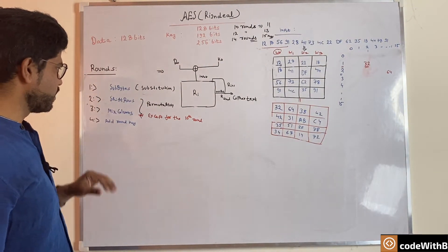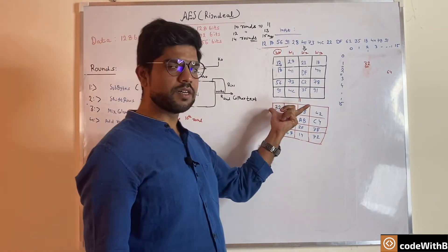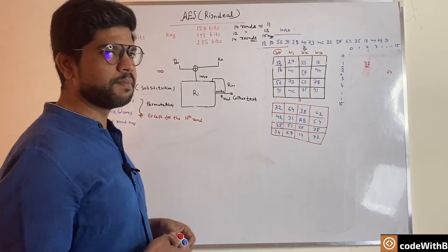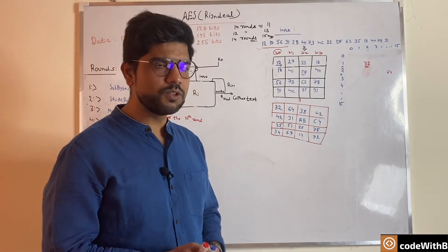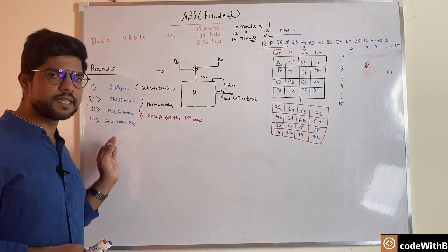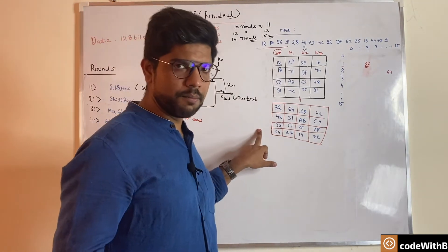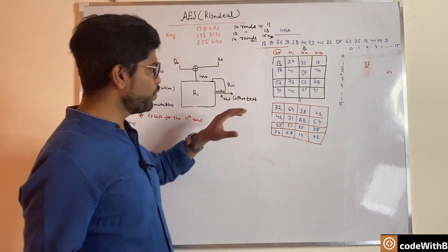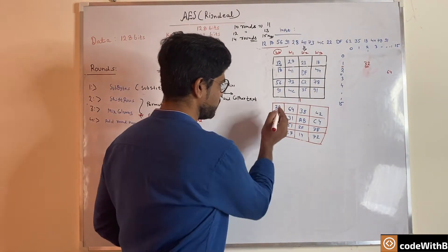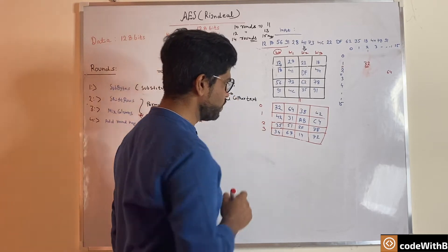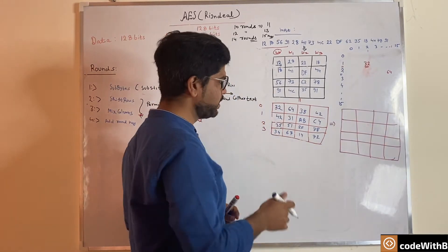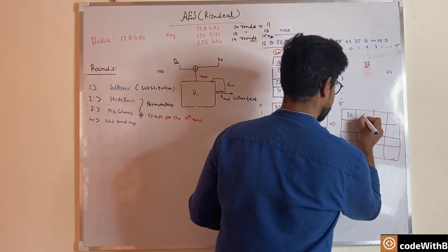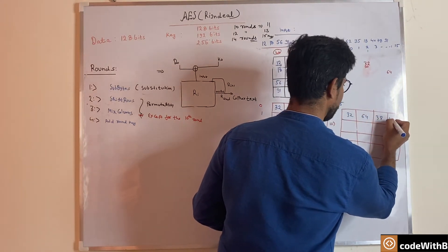Now let's see how shift rows works. Shift rows operates on the rows and shifts the data within each row. The shifting is based on offset values defined by the row number — the offset tells how many bytes are shifted. We have row 0, row 1, row 2, and row 3. Row 0 will not be impacted. So for example we have values 32, 64, 38, and 42 in row 0.